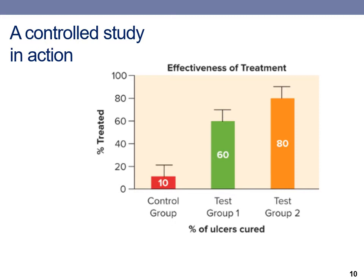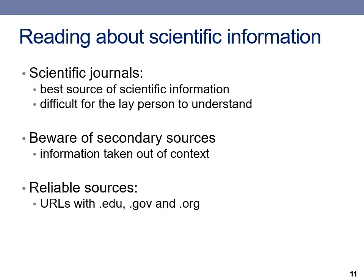You should feel comfortable reading a graph and summarizing the data. When reading or researching scientific information, you should search information in scientific journals or from reliable sources. These reliable sources have URLs that end in .edu, .gov, and .org. You should stay clear of secondary sources that end in .com, as these sites may take scientific data out of context to give the reader skewed information.